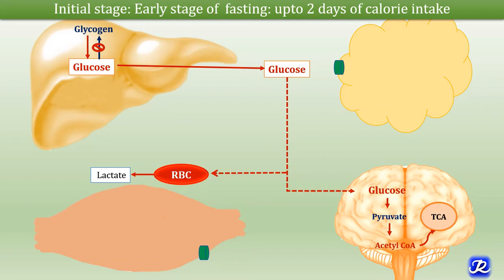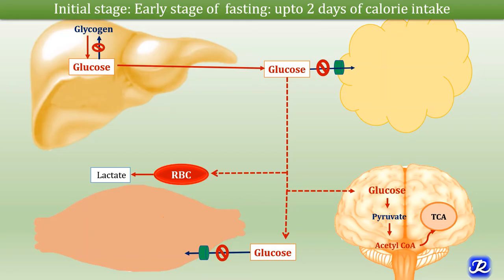Due to low insulin levels, entry of glucose into adipose tissues and muscle is inhibited, because GLUT4 transporters present on adipose tissue and muscle are insulin-dependent. As insulin levels are decreased in fasting and starvation, there is no uptake of glucose by adipose tissue or muscle.